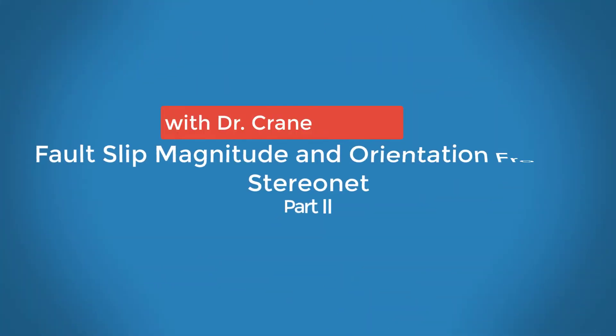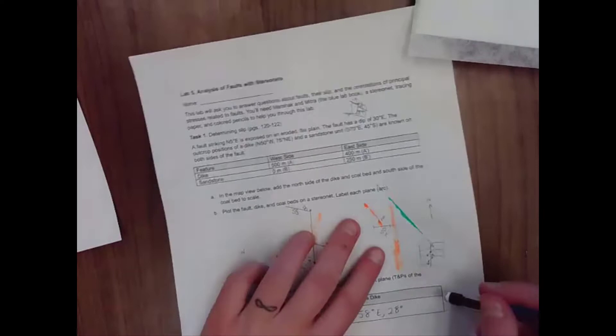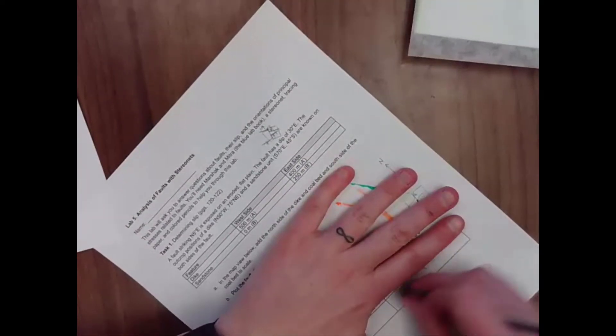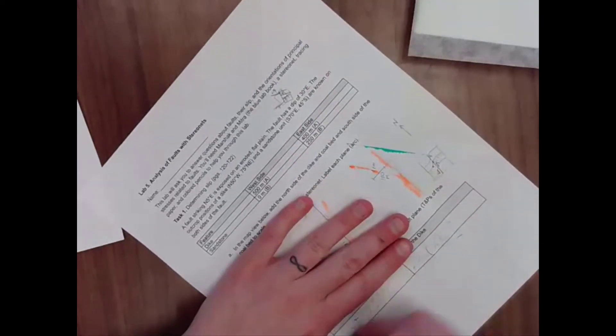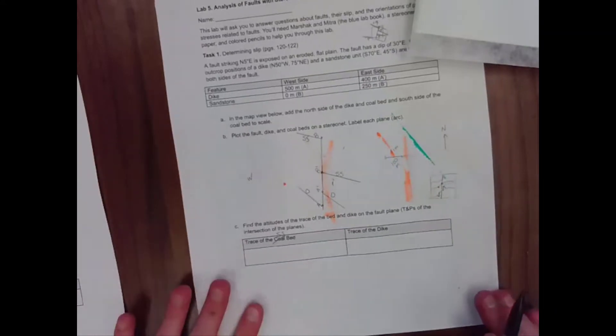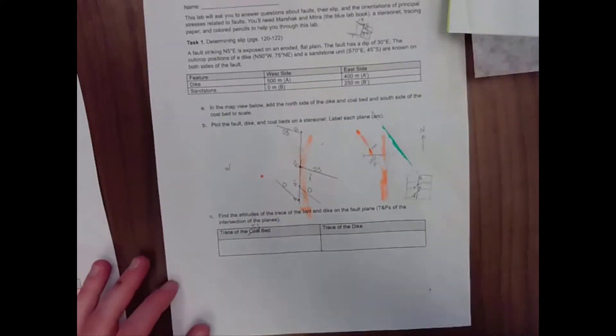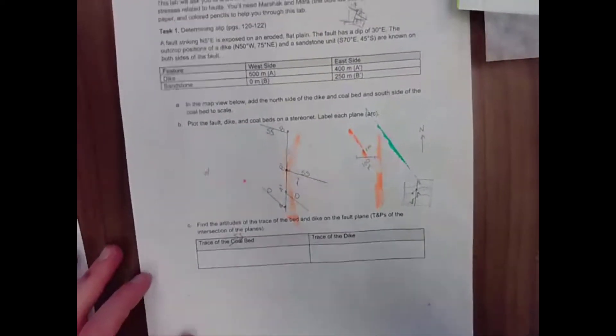In part two of this series, we're going to go ahead and carry out the rest of this problem associated with the way that you find the slip and the magnitude of slip and the orientation of slip associated with a fault plane when you have multiple units that are crossing that fault plane where you can measure the trends and plunges of those intersection lines.